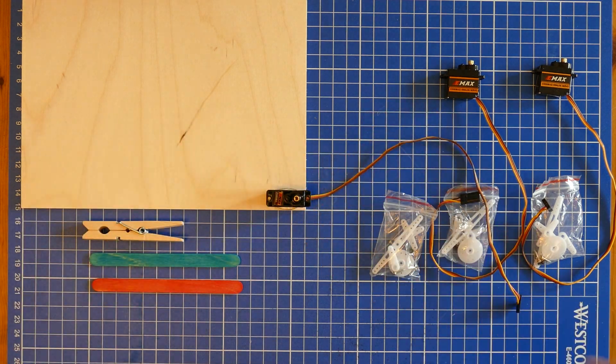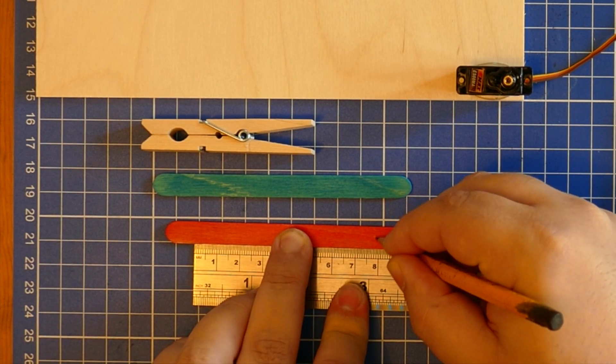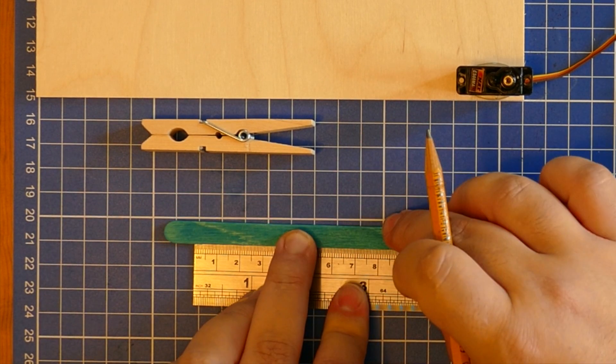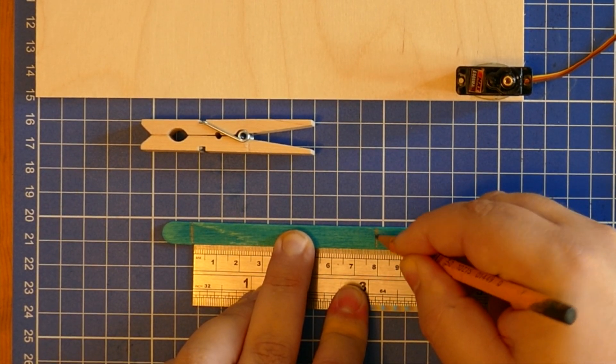The lolly sticks are going to form the upper and lower parts of the brachiograph's arm. Mark out 8cm lengths on each lolly stick. We want these to be the centres of rotation and we'll use these marks to line everything up.